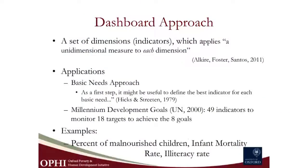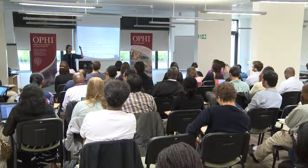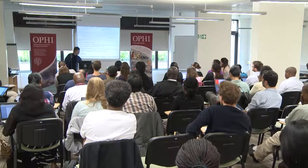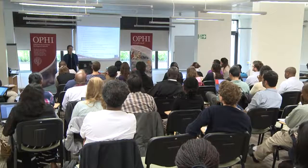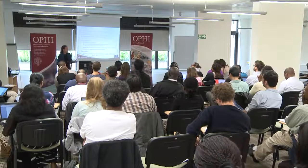You know what a dashboard is. It's simply a set of indicators like the percentage of children who are not attending school, the ratio of girls and boys attending primary school, the maternal mortality rates — deaths of women per 100,000 women — or the child mortality rates, deaths of children per 1,000 children. What a dashboard does is it takes a set of unidimensional indicators for dimensions and applies them.